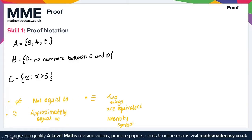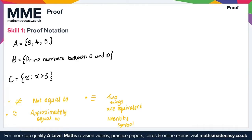Moving on to the logic symbols you need to understand. The first type is P with an arrow pointing towards Q, which means 'if P, then Q' — in other words, P implies Q.